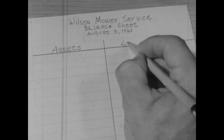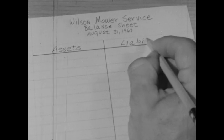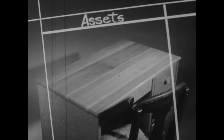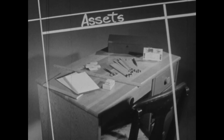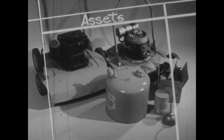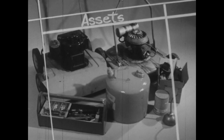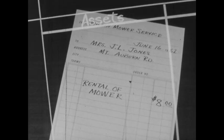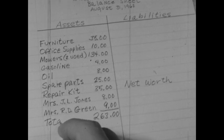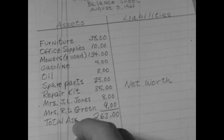In the balance sheet for his mower service, Jim will list what he owns — his assets — and he will list what he owes — his liabilities. What do Jim's assets include? They include his desk, chair, and office supplies, two used mowers, gasoline, oil, spare parts, a repair kit, $8 owed to him by Mrs. Jones, and $9 owed to him by Mrs. Green. After listing his assets, Jim totals them. $263 represents his total assets.